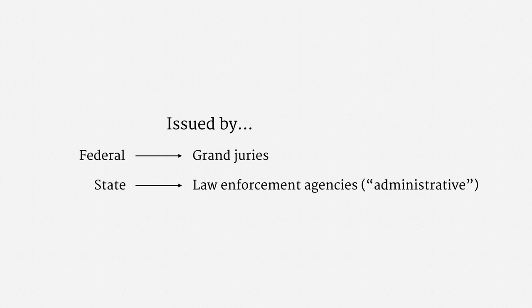There is a third context in which subpoenas might arise, and that's after criminal charges have been filed, but before the criminal trial has commenced. In legal jargon, that's called pretrial discovery, or sometimes just a trial subpoena. Both federal and state authorities often make use of this procedure. The rules for these three types of subpoenas are generally similar, so for simplicity, the materials in this course mostly lump them together.